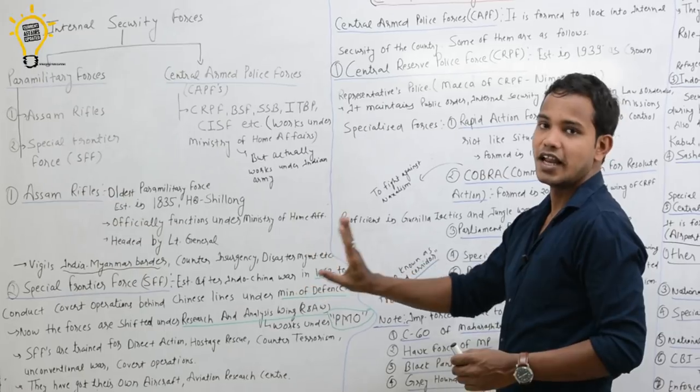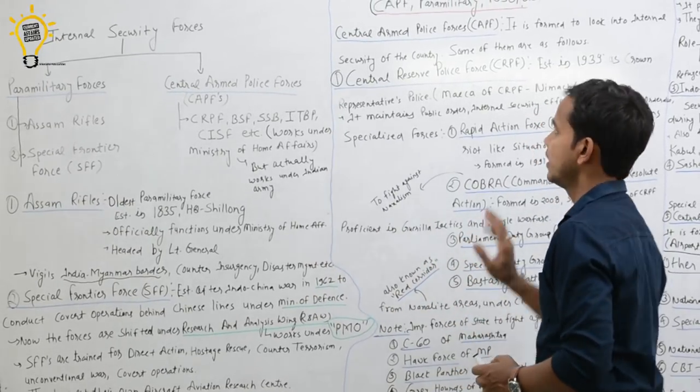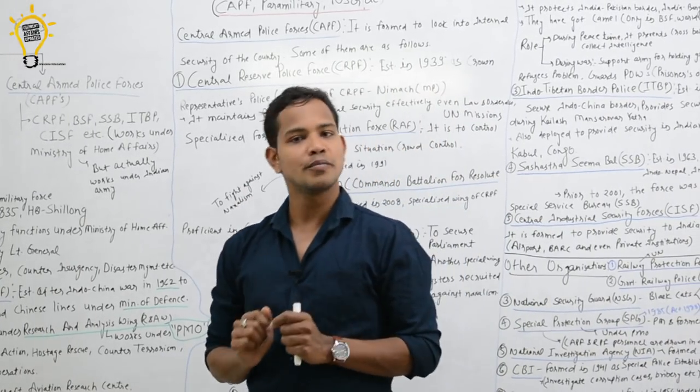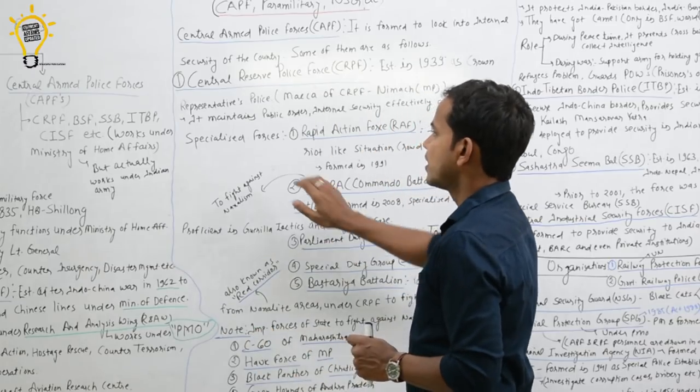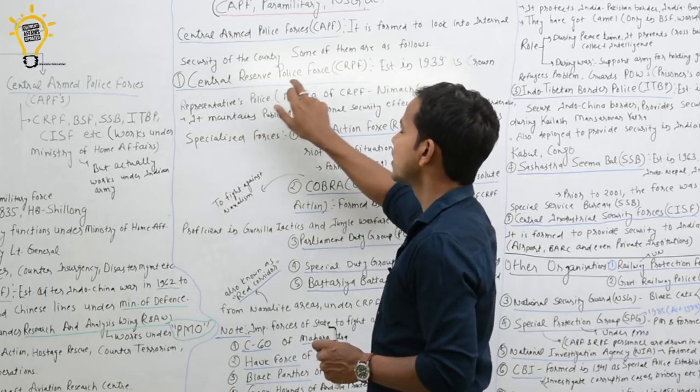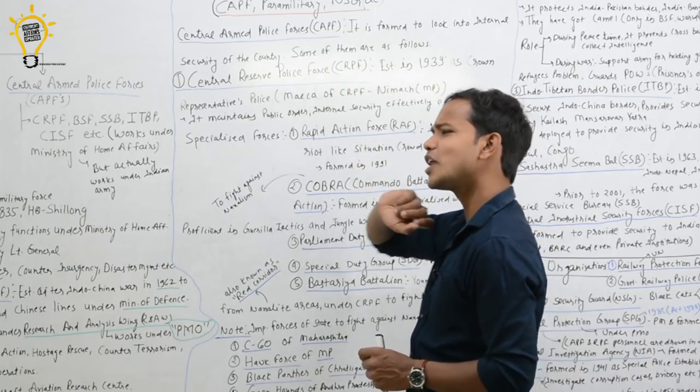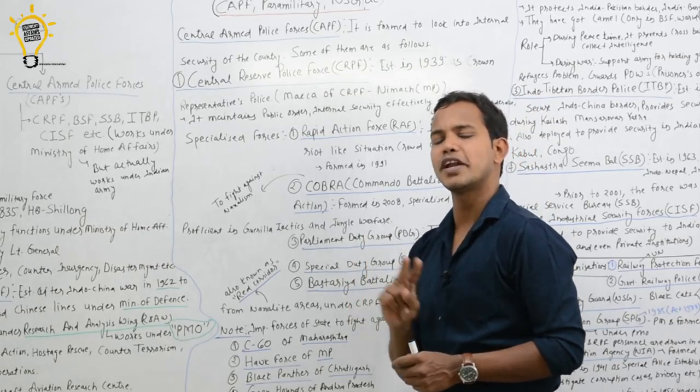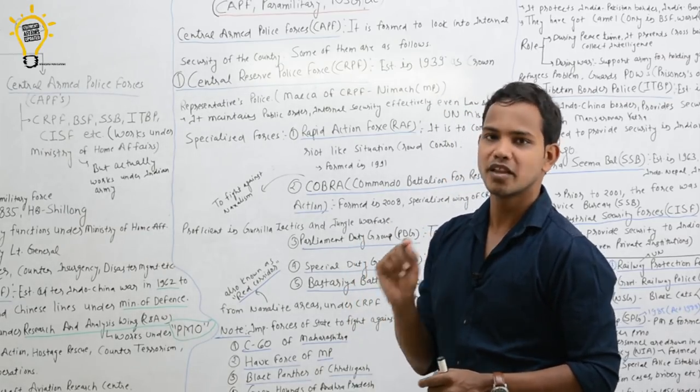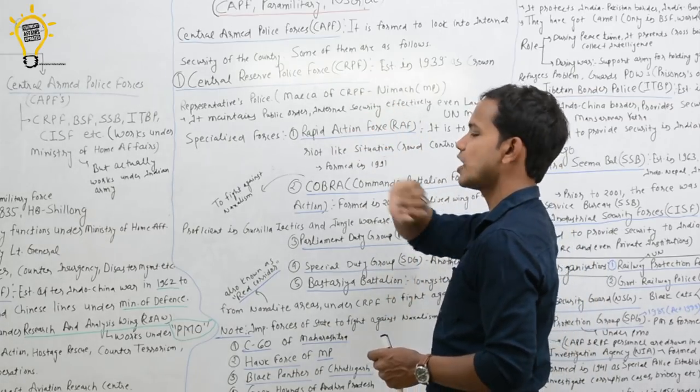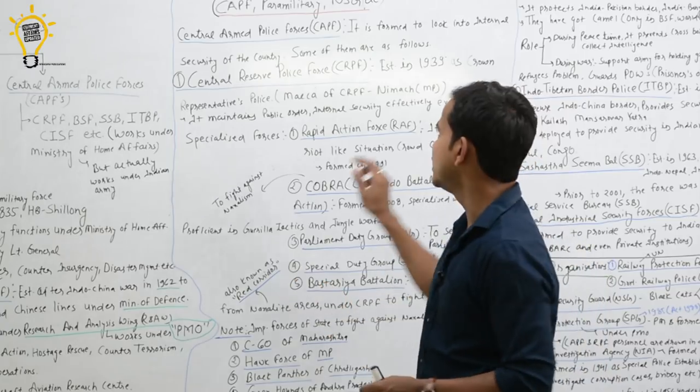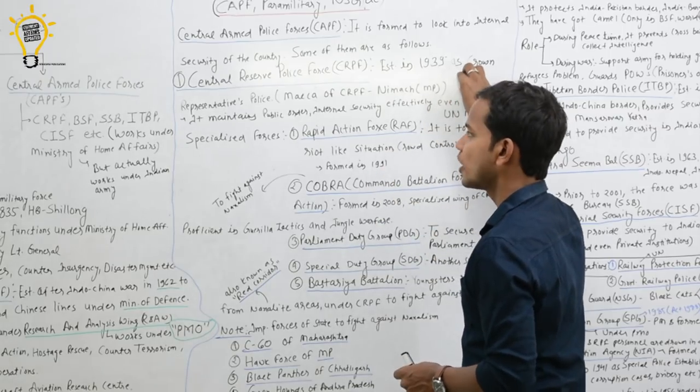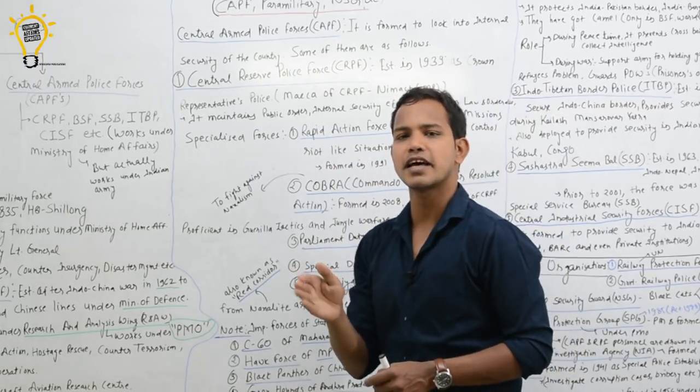We have done paramilitary forces. Now it comes to Central Armed Police Forces. Central Armed Police Forces, main kaam country ki internal security ko protect karna hai. First comes the Evergreen Force, Central Reserve Police Force, CRPF. CRPF started in 1939, it was called Crown's Representative Force. Only two battalions started at Neemuch, which is in Madhya Pradesh. That's why sometimes the question is asked, CRPF ka Makkah kis ko bula jata hai? It is Neemuch, which is known as the Makkah and Madinah of CRPF.